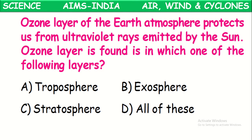The ozone layer of the earth's atmosphere protects us from the harmful ultraviolet rays emitted by the sun. The atmosphere is segregated into five regions. One of them is the troposphere where we are living. The next layer after the troposphere is the stratosphere. The ozone layer exists in the stratosphere, which is the second layer from the earth's surface.